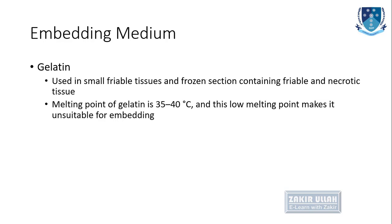Gelatin is also used as an embedding medium for very small and delicate tissues and for frozen sections which contain delicate, breakable, or necrotic tissue. The melting point of gelatin ranges from 35 degrees centigrade to 40 degrees centigrade. Due to this low melting point, embedding in gelatin is not usually performed, as this melting point makes it unsuitable for the purpose.